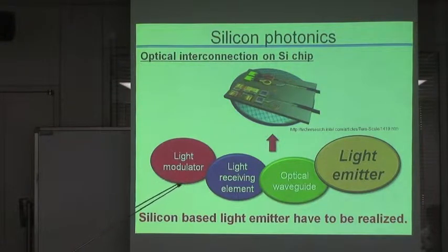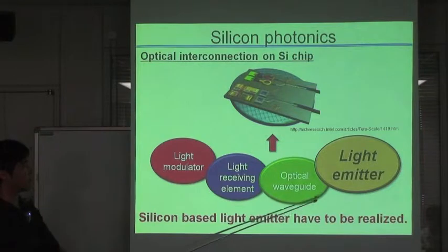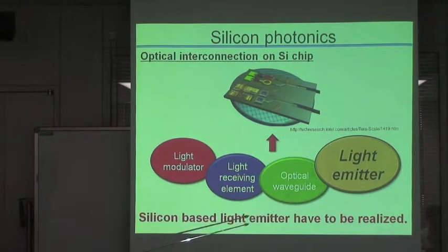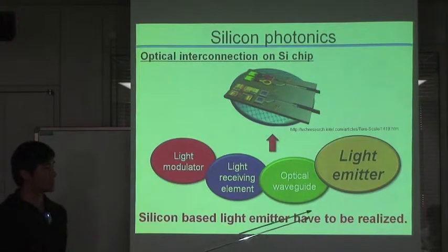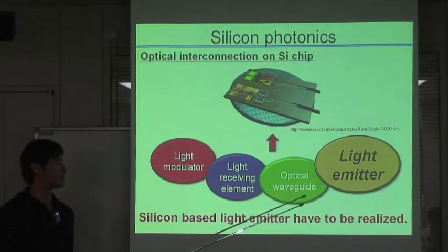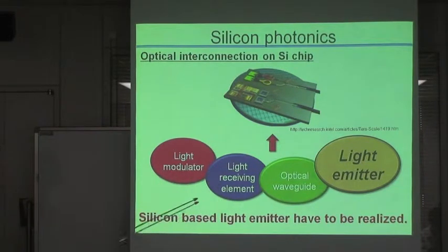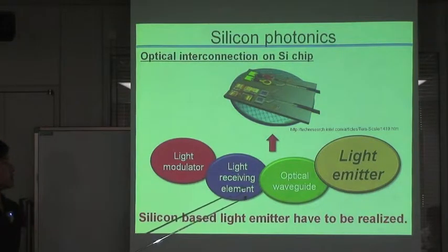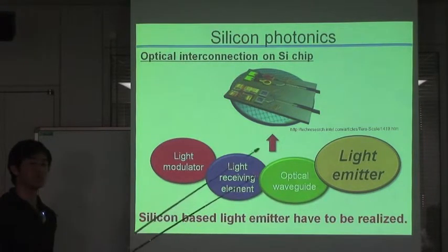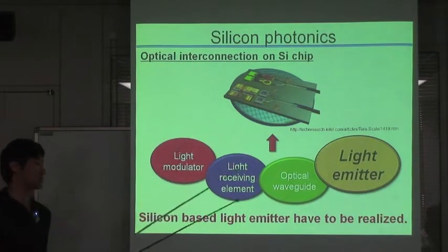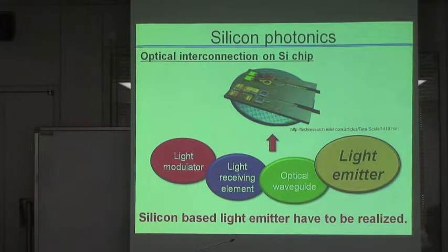That is, silicon-based light modulator, light receiving element, optical waveguide, and light emitter. These three elements are already realized in silicon, but the silicon-based light emitter is not realized yet because silicon has an indirect band-gap structure, so it's hard to emit light. Currently, the hybridization of these three silicon-based elements and the light emitter made of compound semiconductor is performed. But if the silicon-based light emitter is realized, the compatibility with present silicon fabrication technology is much better. So silicon-based light emitter has to be realized.